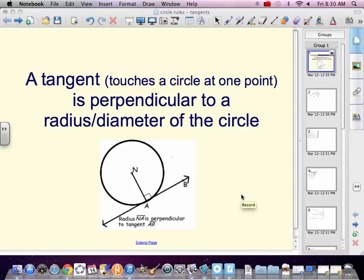Time for some rules of circles. Let's start playing with a tangent rule. A tangent is that line that touches a circle at one point on the circle, and only one point. A tangent is perpendicular to the radius, and also therefore it's perpendicular to a diameter.